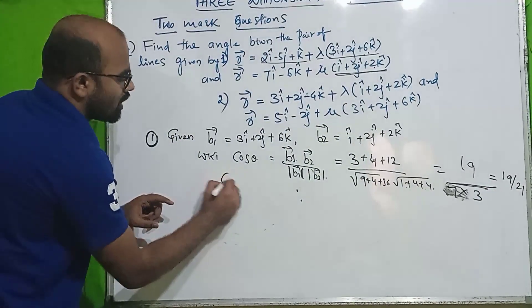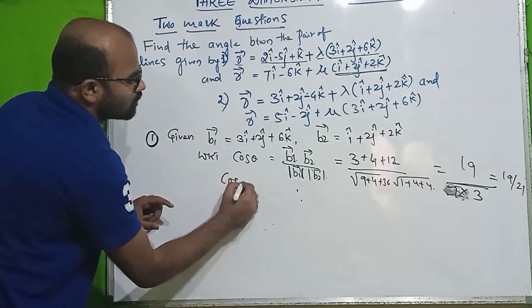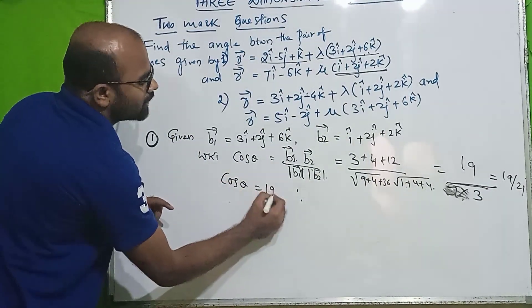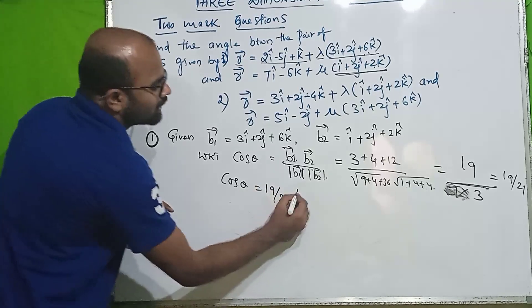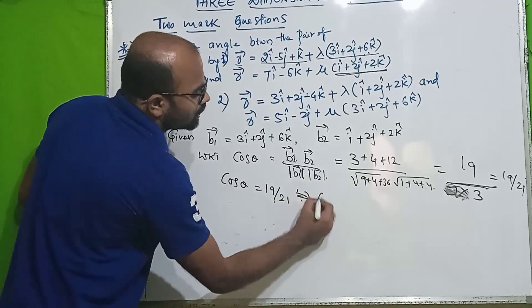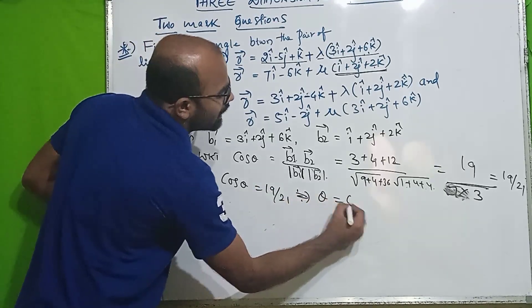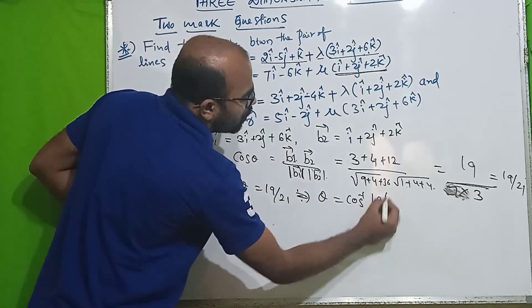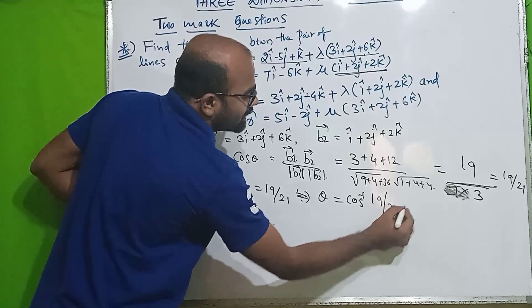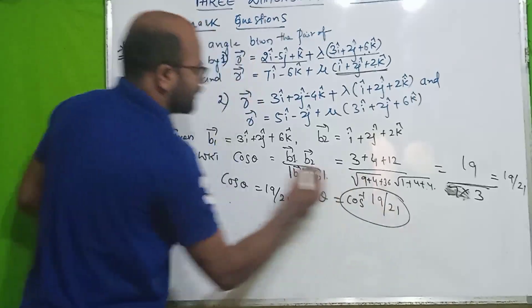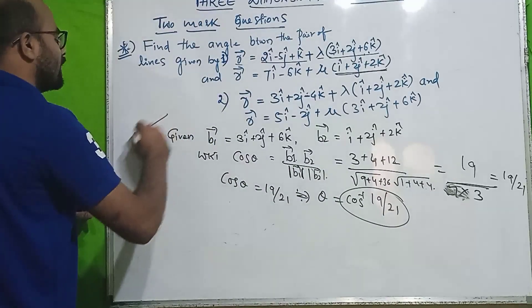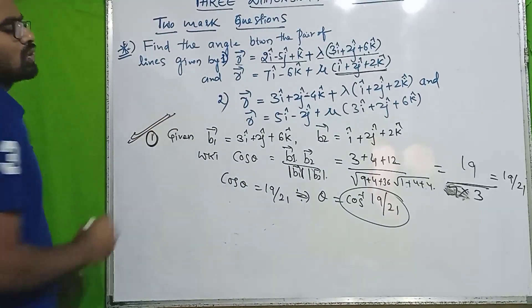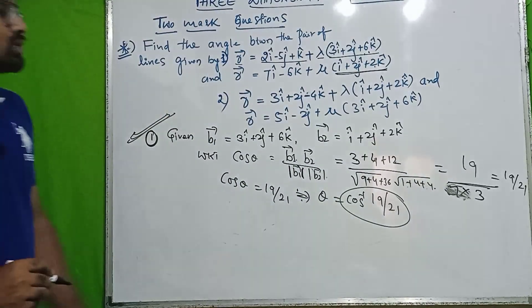So cos θ = 19/21, therefore θ = cos⁻¹(19/21). This is a very, very important question.